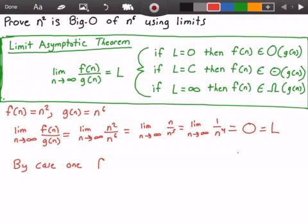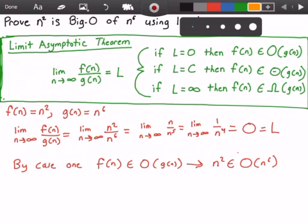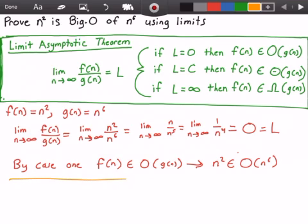f of n belongs to Big O of g of n, which implies that n squared belongs to Big O of n to the power of 6. And that's our answer.